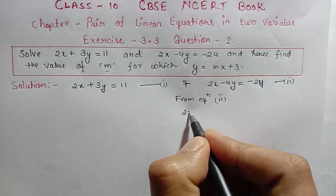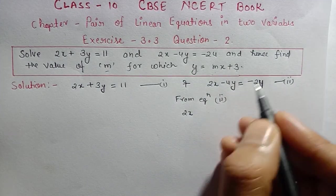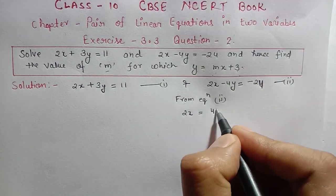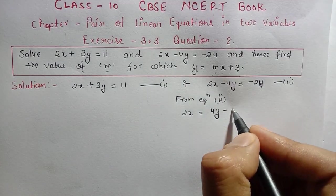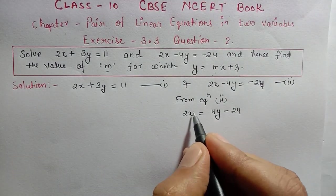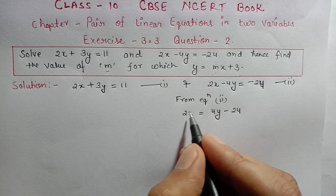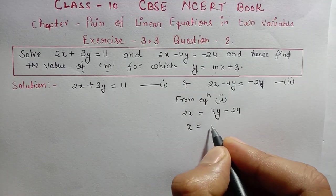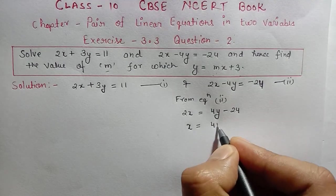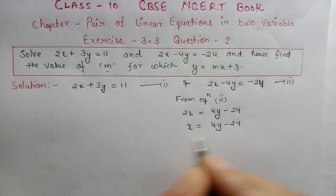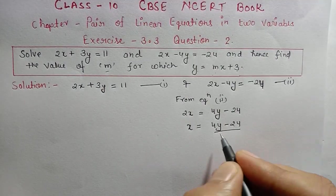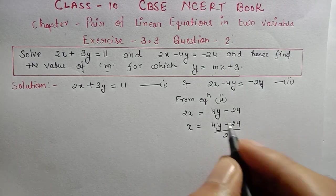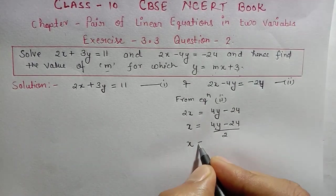From equation 2, transforming 2x - 4y = -24: we move -4y to the other side, so it becomes 4y - 24. Then we divide by 2 to isolate x. So x equals 4y minus 24, divided by 2.